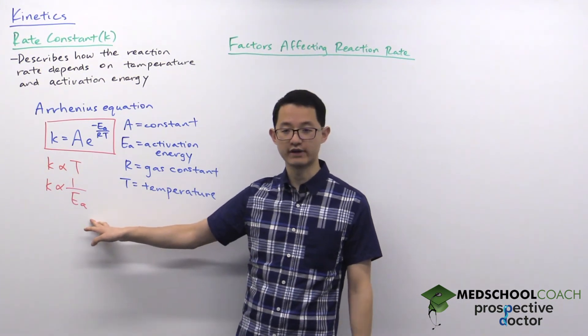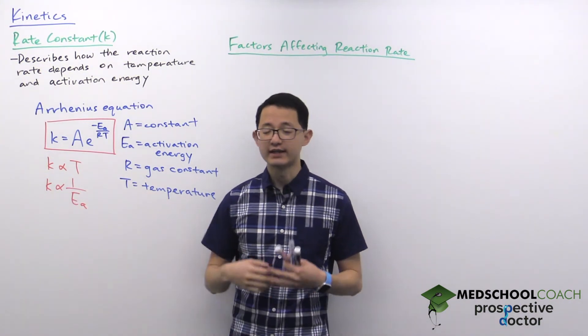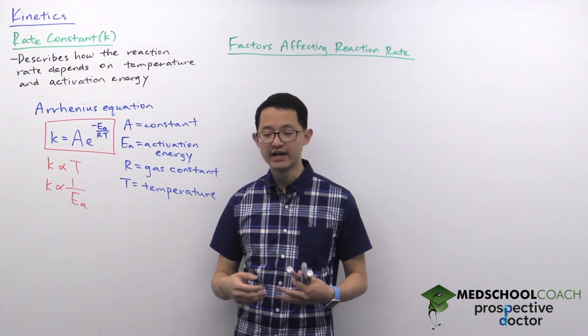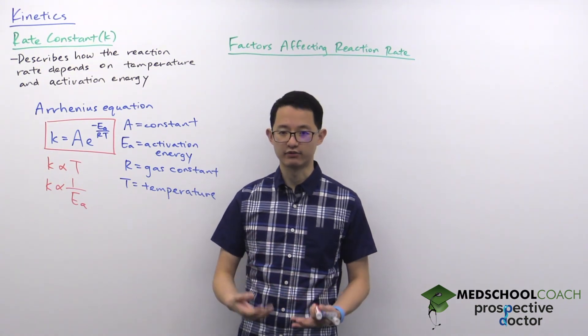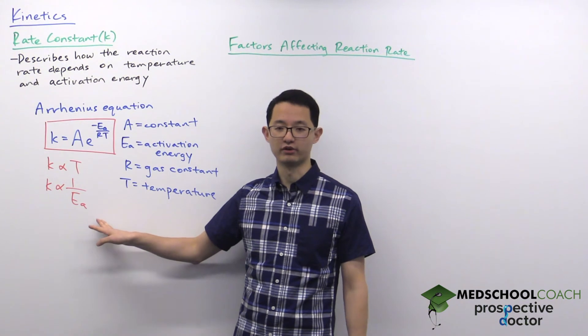Inversely proportional activation energy makes sense. We've discussed this before. The higher the activation energy, the more energy is required for the reaction and the slower the reaction.